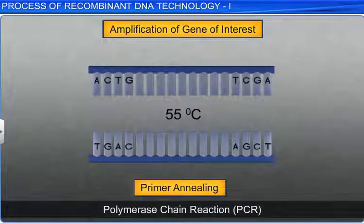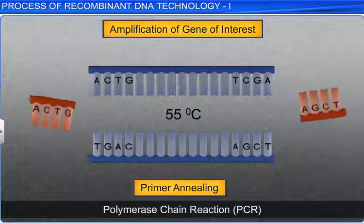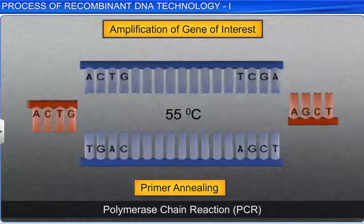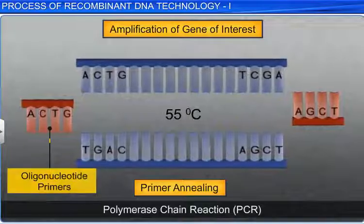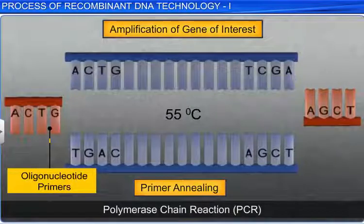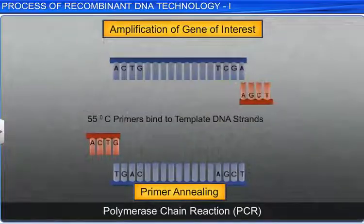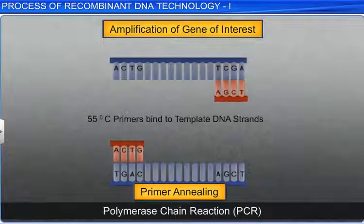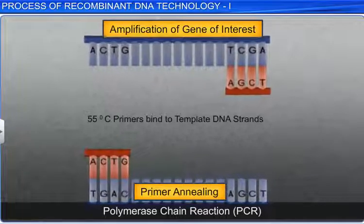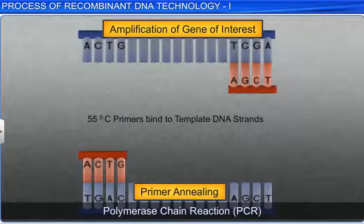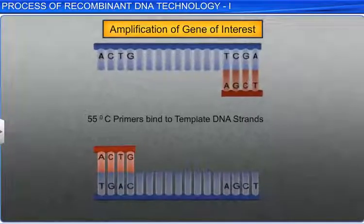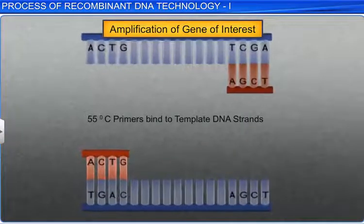In the second step, the solution is cooled to around 55 degrees centigrade in the presence of oligonucleotide primers that are complementary to DNA regions. Two oligonucleotide primers anneal, or hybridize, to each single-stranded template DNA. Annealing sequences are located at the prime ends of the two strands of the desired segment.